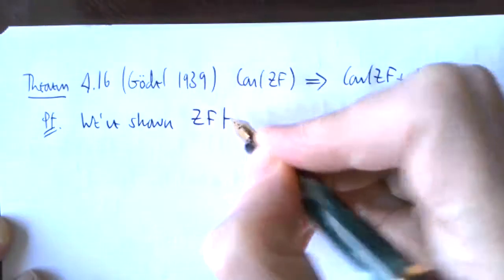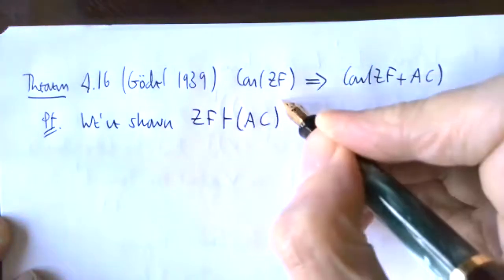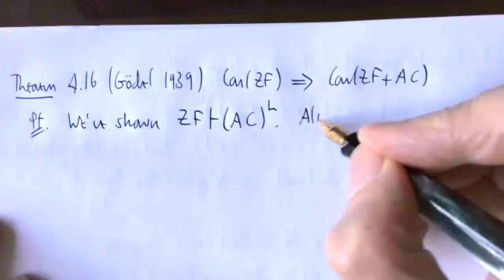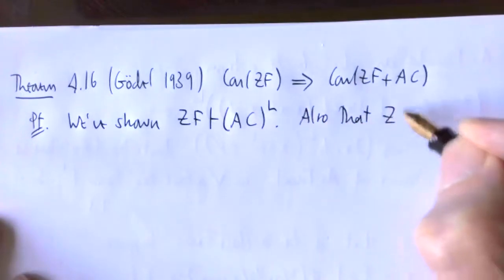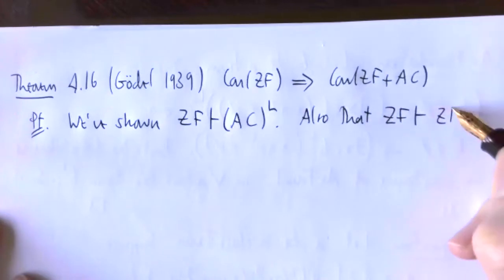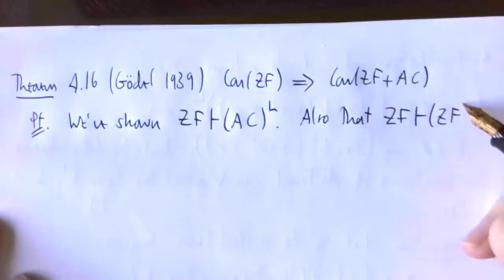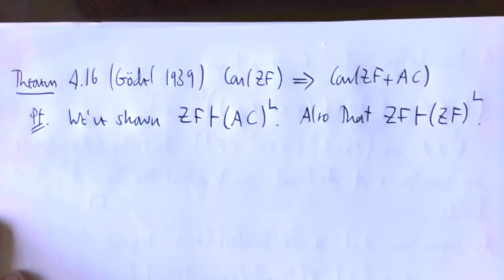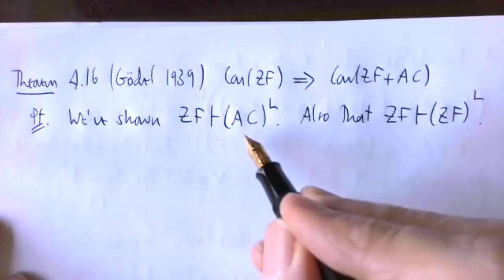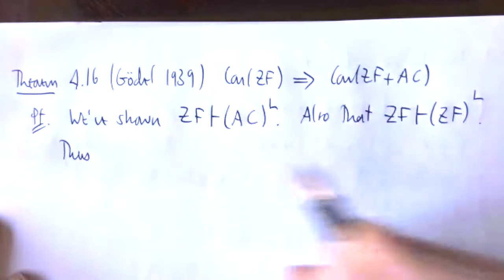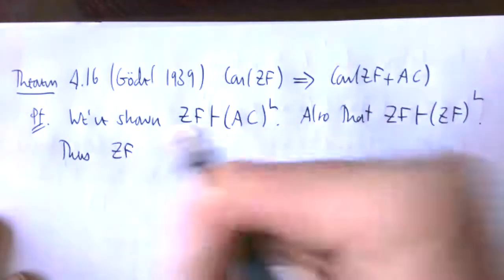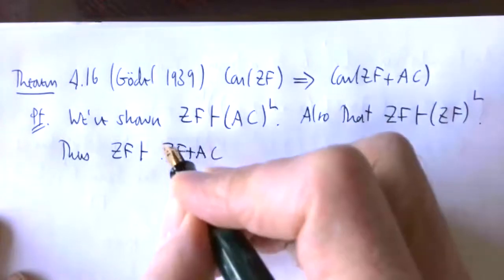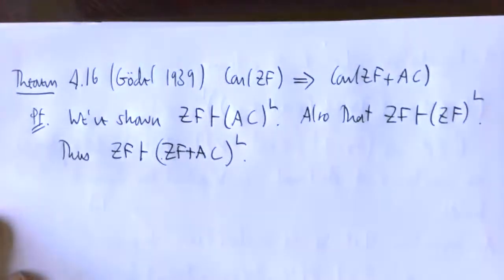We've shown from ZF that the axiom of choice held in L, it constructed a global well-ordering of the whole universe. Also, that given any axiom of ZF, it held relativized to L. So these were separate arguments, but of course, we can put those arguments together, and we get that ZF plus AC holds relativized to L.